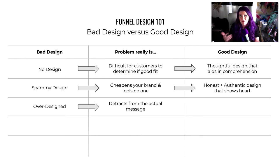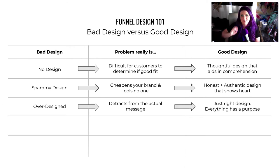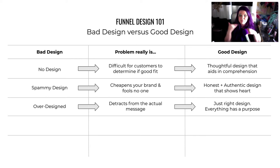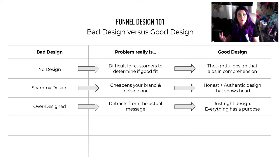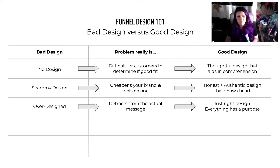Of all these mistakes, over-designing is the easiest to make because people think if a little bit of design is good, then a lot of design is better — but that's not the case. Good design is just right, like Goldilocks. Not too much, not too little. How you know it's just right is that everything has a purpose. Every element on the page has a reason for being there. If there's a divider line, it's because you needed a break in thought. Every piece of design should aid comprehension, not just be decoration.